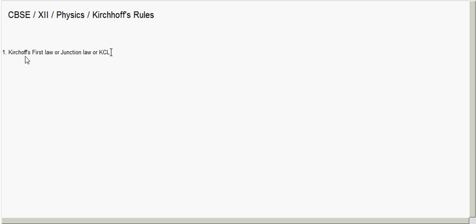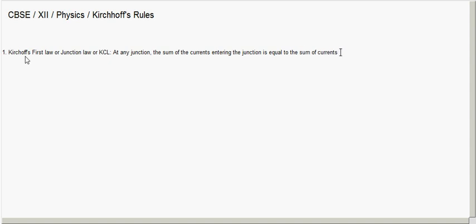This rule is also called the junction rule, and it is applicable to any junction. The first law states: at any junction, the sum of the currents entering the junction is equal to the sum of the currents leaving the junction.